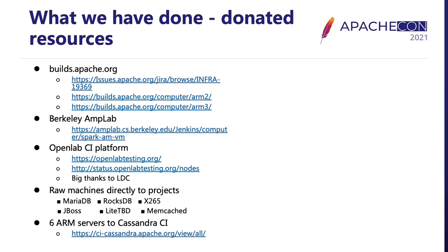Thanks for Yikun's overall introduction. Here I will continue to talk about what we have done and illustrate with a typical case. The ARM CI is an important element for promoting ARM support for open-source projects. However, for most open-source projects, their communities do not have ARM resources to build ARM CI. To help them, we have donated ARM resources to their communities. We have provided two ARM servers to the Apache Infra Team and helped configure ARM CI for Hadoop and HBase projects. Both projects now run daily ARM CI tasks on those two servers.